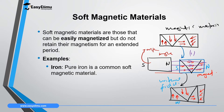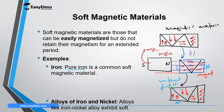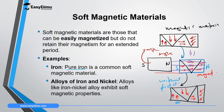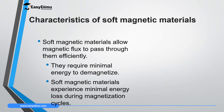Examples of soft magnetic materials include pure iron, and the alloy or mixture of iron and nickel, called the iron-nickel alloy, which is also a soft magnetic material. Now let's look at some characteristics of soft magnetic materials.